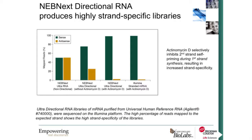The NEBnext Directional RNA kit produces highly strand-specific libraries. There is data from New England BioLabs comparing the NEBnext Ultra RNA, which is a non-directional kit, and their Ultra Directional kit with and without actinomycin D. Their stranded kit produces its best results in conjunction with actinomycin D, which is known to block DNA-specific priming of reverse transcriptase. But even without it, it still does a fairly decent job producing effectively stranded libraries compared to the non-directional kit.